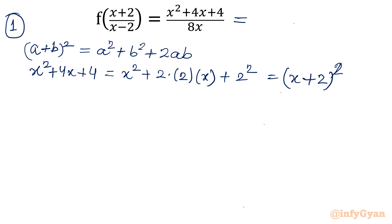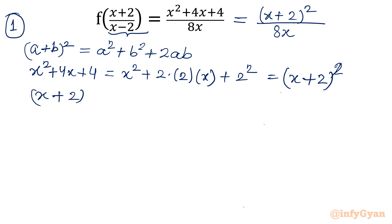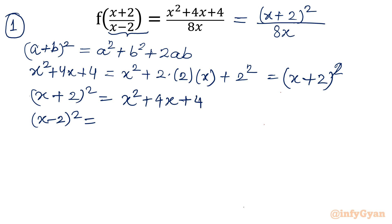Now what will we do for the denominator 8x? I am trying to convert the functional variable (x+2)/(x-2) on the RHS in terms of (x+2) and (x-2). That is my objective. Let me begin with (x+2)/(x-2) whole square. So I will write x² + 4x + 4 and also x² - 4x + 4.